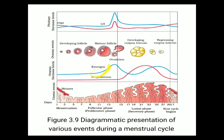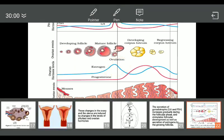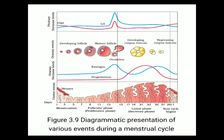During the follicular phase, the level of estrogen increases while progesterone remains very low. During the ovulatory phase, the level of estrogen gets very high. In the luteal phase, the level of progesterone increases significantly, while estrogen decreases. The diagram also shows ovarian events - what different events are taking place inside the ovary.